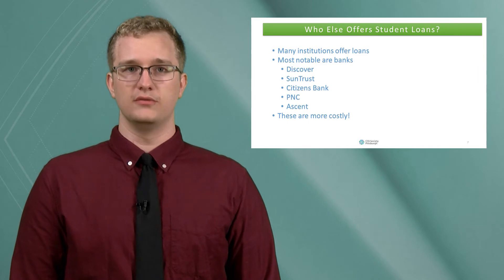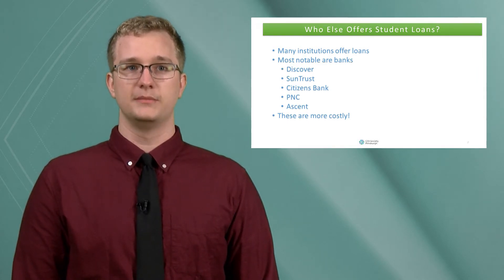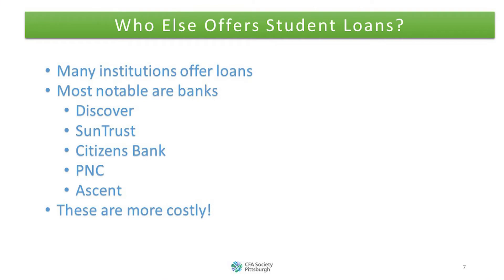Many institutions offer loans. Some of the most notable banks are Discover, SunTrust, Citizens Bank, PNC, and Ascent. There are a lot of other financial institutions that offer loans. However, these private loans are more costly than federal loans.